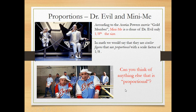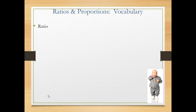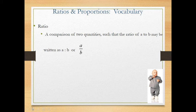Before we begin, let's go over some basic definitions. The first word is ratio. A ratio is just a comparison of two quantities, such that the ratio of a to b may be written as a:b. We read that colon as 'to', so a to b, or a over b — it's just a fraction.